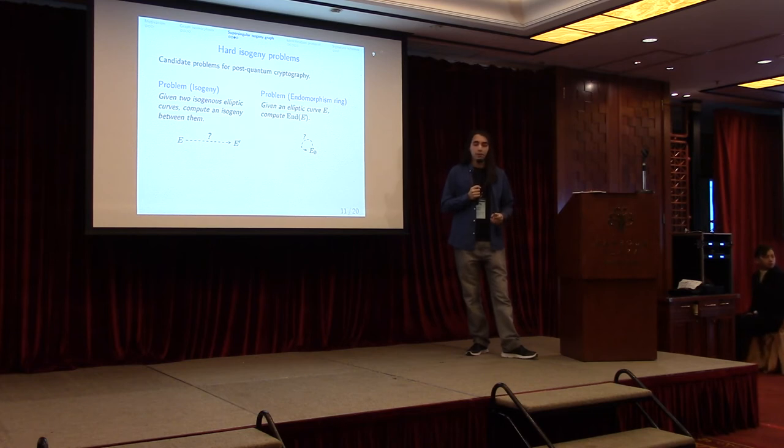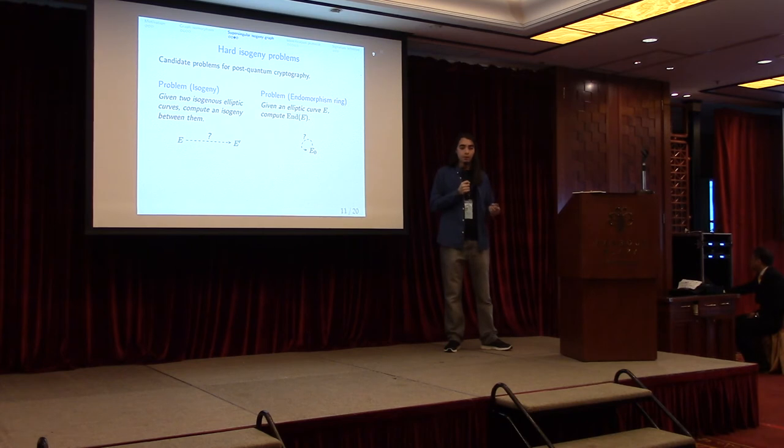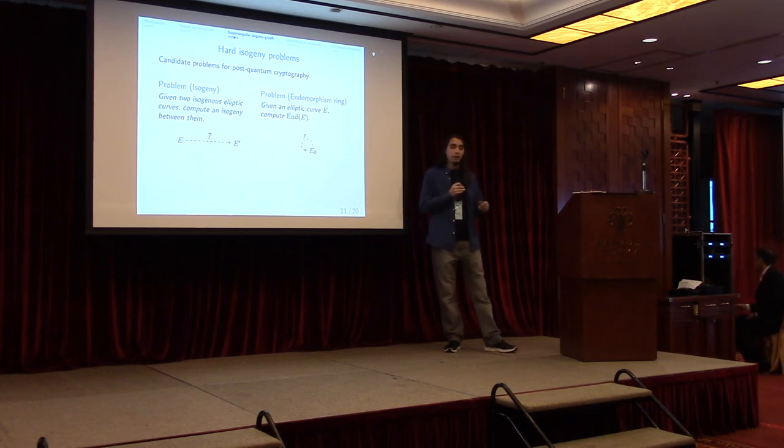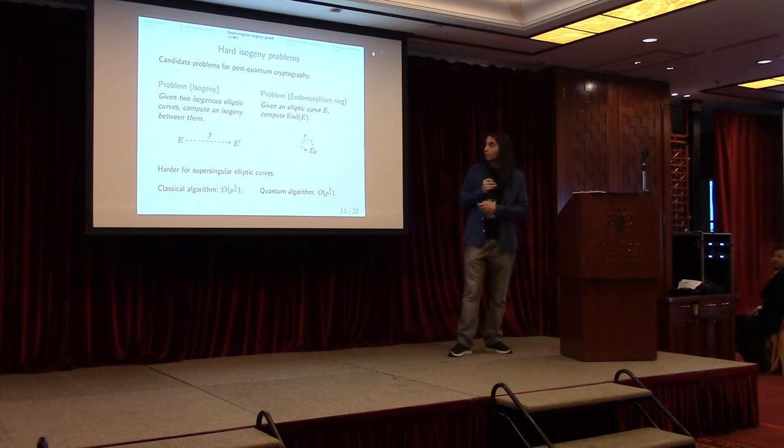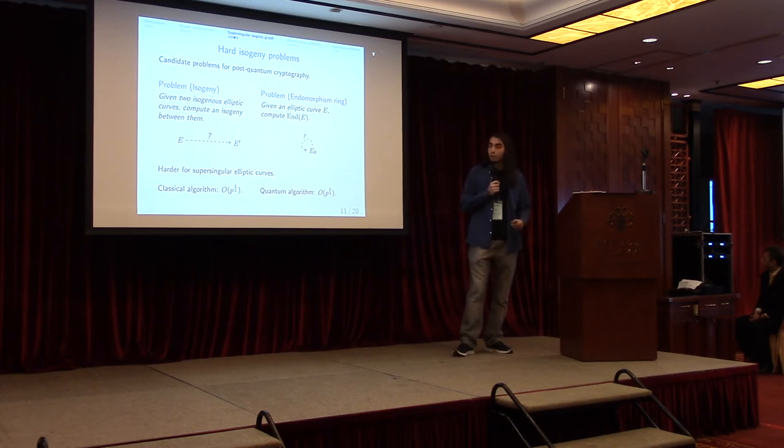But the thing is, not for any curves are these problems of the same level of hardness. Actually there is a classification of elliptic curves. I won't get into the details of that, but essentially there are two types of elliptic curves, either ordinary or supersingular, and we can solve these problems differently for each of these types. It turns out that they are harder to solve for supersingular elliptic curves. Actually, these two problems in this case are equivalent. They are not known to be equivalent for ordinary curves. We have complexities of the order of p^(1/2) classically and p^(1/4) quantumly, whereas in the ordinary case we often have sub-exponential time algorithms to solve them. So we will stick with the supersingular case.